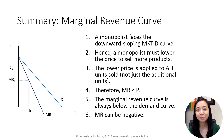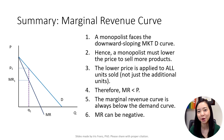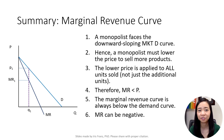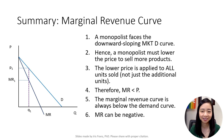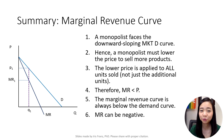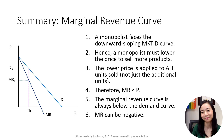Here is the summary: a monopolist faces the downward sloping market demand curve by itself. Therefore, to sell more units, the monopolist must lower the price of all units, not just the additional units it wants to sell. As a result, marginal revenue is lower than the price and the marginal revenue curve is below the demand curve. Marginal revenue can be negative. I hope this helps and I'll see you next time. Bye.